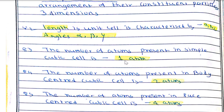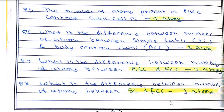The number of atoms present in a simple cubic (SC) cell is one. In body-centered cubic (BCC), two atoms are present. In face-centered cubic (FCC), four atoms are present. The difference between SC and BCC is one atom; between BCC and FCC is two atoms; and between SC and FCC is three atoms.